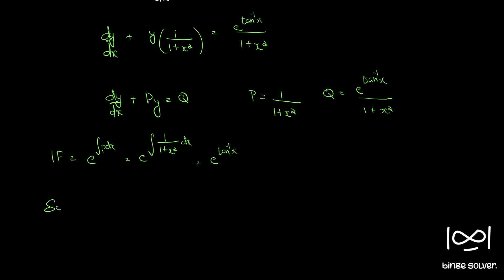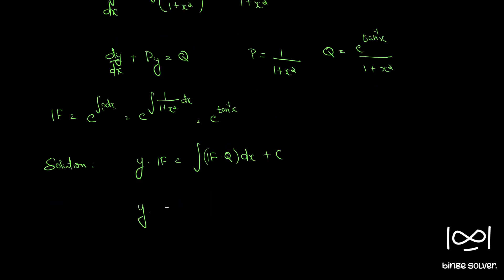The solution for such a differential equation is given by y × (integrating factor) = ∫(integrating factor × Q) dx + C. So we have y · e^(tan⁻¹x) = ∫ e^(tan⁻¹x) · e^(tan⁻¹x) / (1 + x²) dx + C.